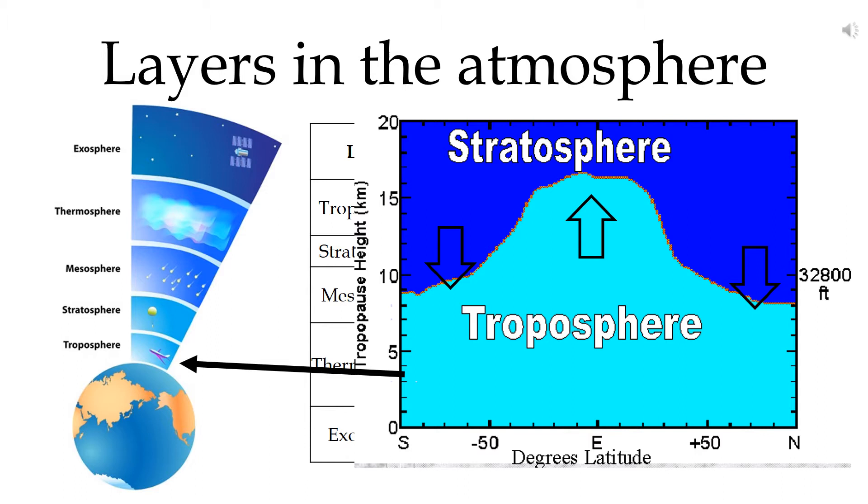Air rises in the tropics where it is warm and falls in the poles where it is colder. This leads to the troposphere being higher at the tropics and lower at the poles.